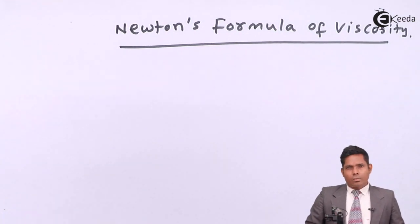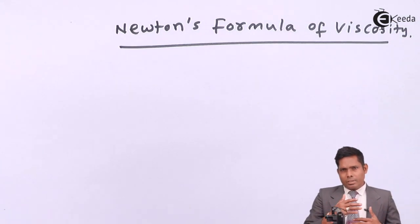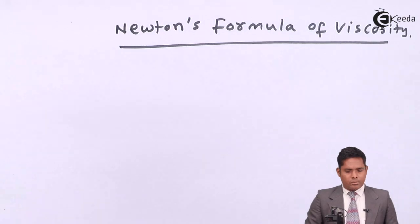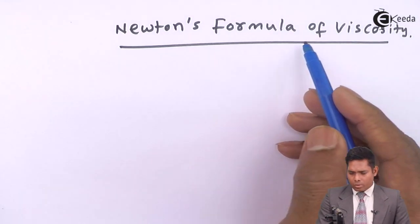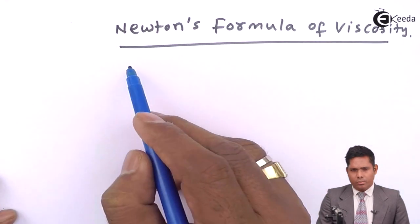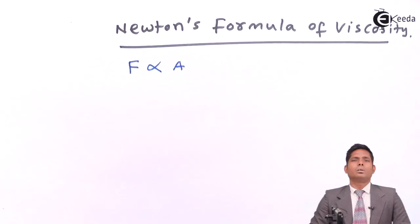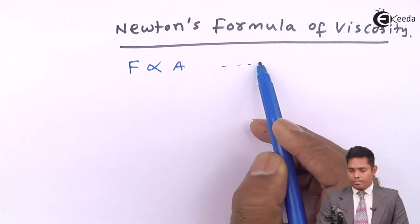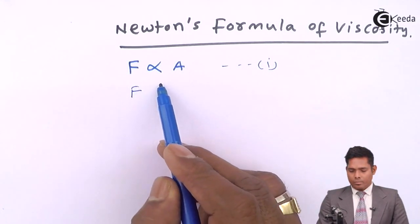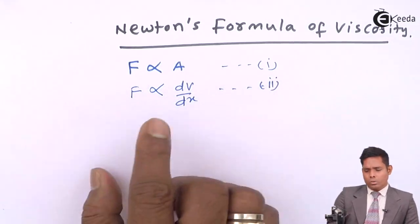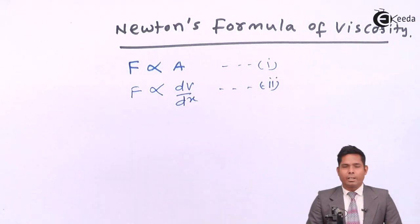the viscous force, it is same like friction, the viscous force or viscous drag does depend on the area of the layers. So first point, Newton observed that the viscous force, the viscous drag depends on the area of the layer. And it also depends on the velocity gradient dv by dx.